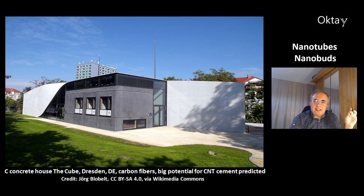This is a nice house called The Cube. It is located in Dresden, Germany. This is a carbon concrete house with carbon fibers. The trick is, with carbon fiber instead of steel, you save a lot of cement. Because in concrete with steel, you have to make thick walls to isolate the steel from the air. But with carbon fibers that do not corrode, you save a lot of cement. For carbon nanotube cement, there is big potential predicted. They should have very high stability.